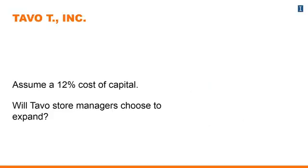We're going to assume a 12% cost of capital. Cost of capital, very simply, represents the threshold that managers must meet for a large-scale investment. If they don't meet this threshold, then it's not worthwhile to the company. The cost of capital decided upon by upper management is informed by a number of factors. The question comes up: will the TAVO store managers — those of the A Division and the B Division — choose to expand to offer the gluten-free menu?